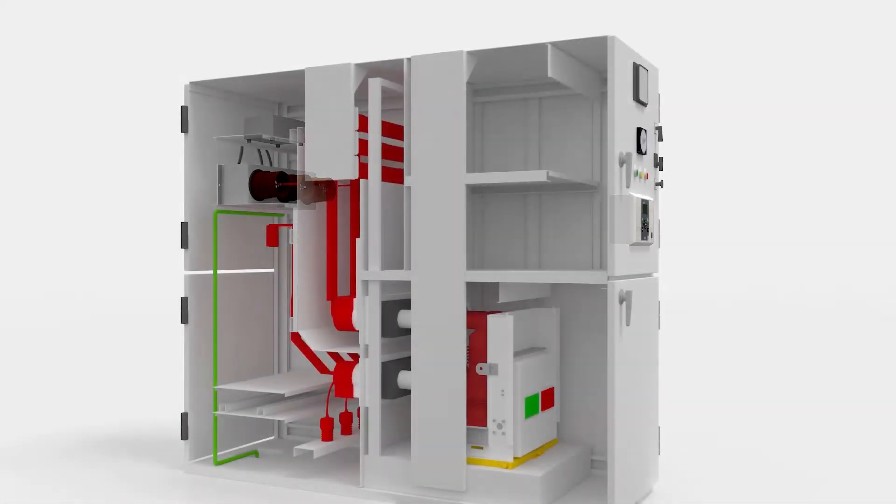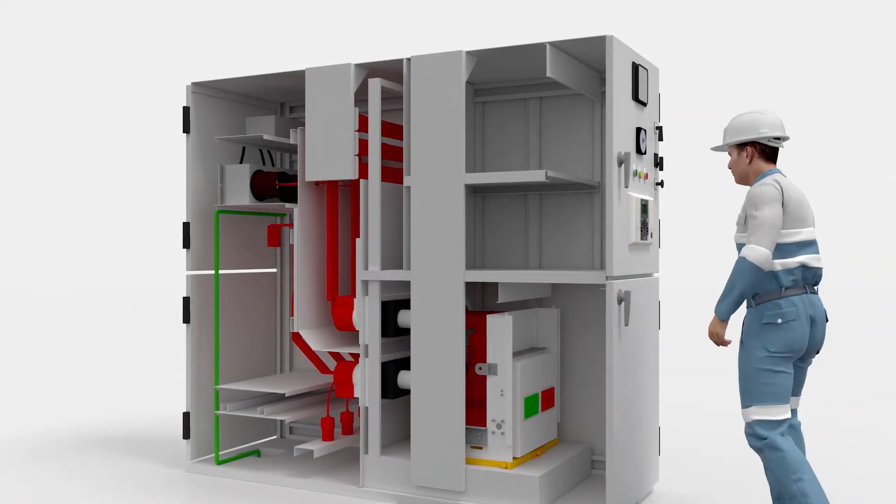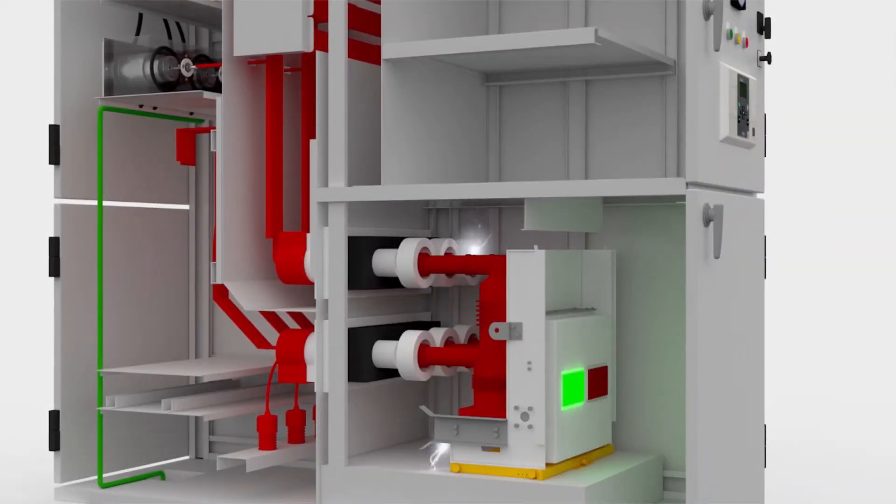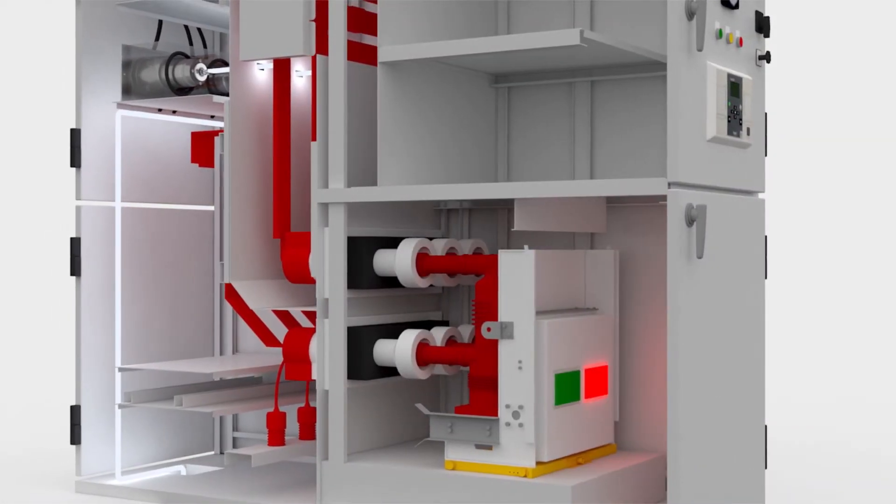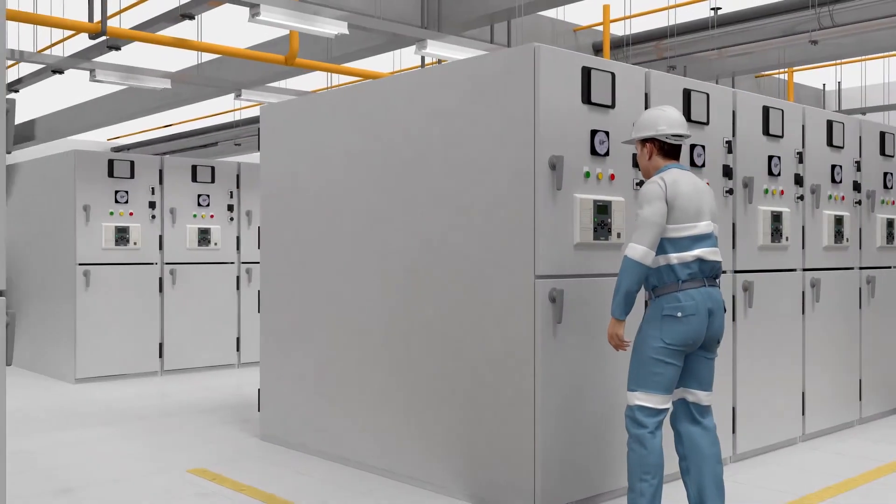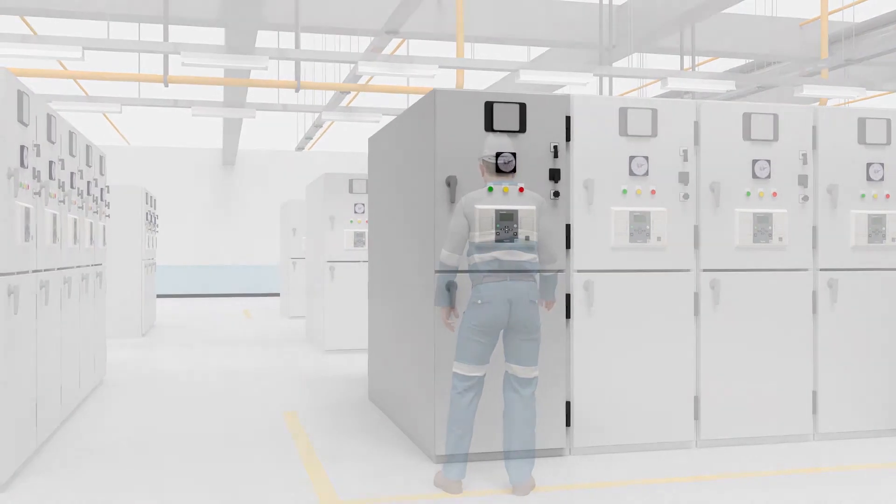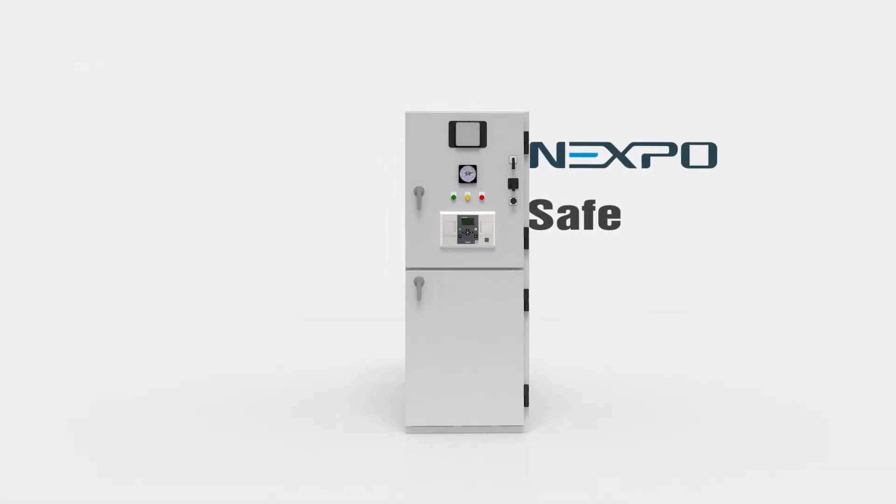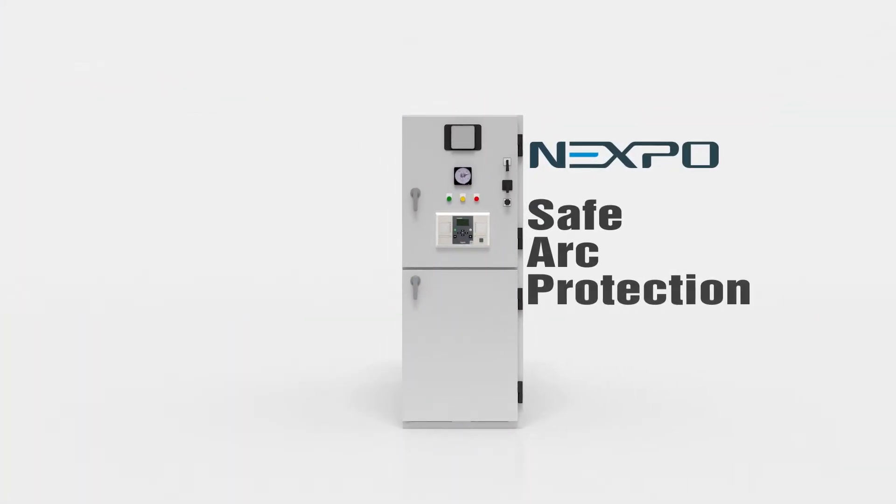NEXPO Arc Protection System, which is the best solution for electrical equipment, is doing its best to ensure stable operation of electric power by protecting workers' safety and facilities from electric arcing accidents and power distribution system. NEXPO's safe and reliable arc protection system that protects your lives and properties.